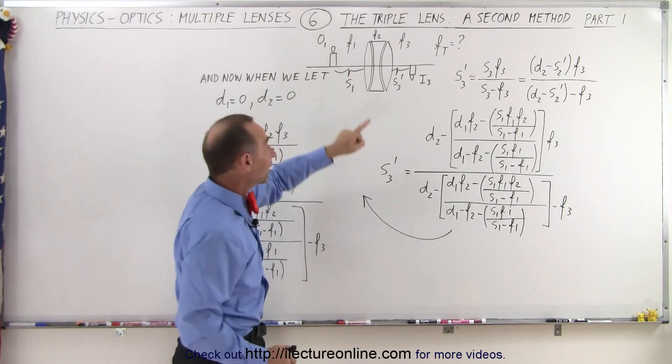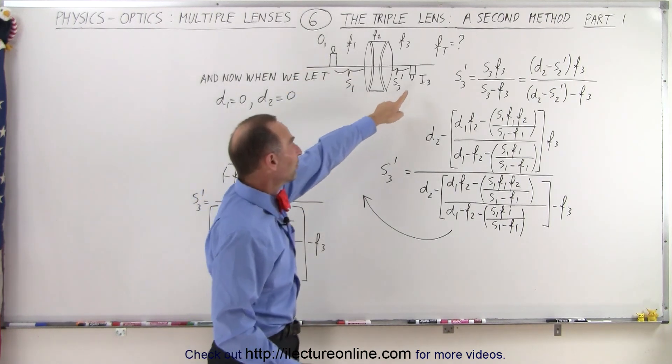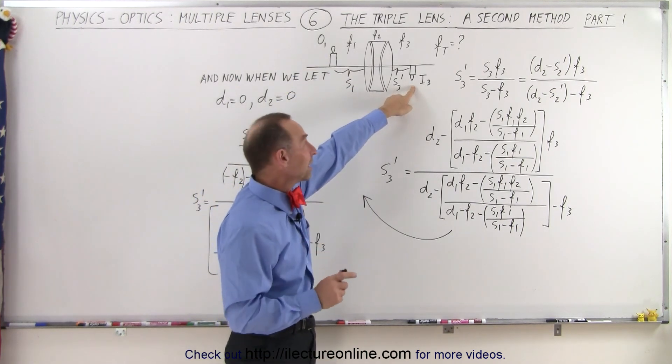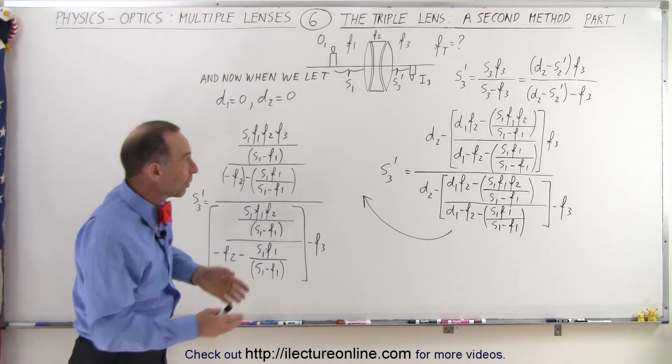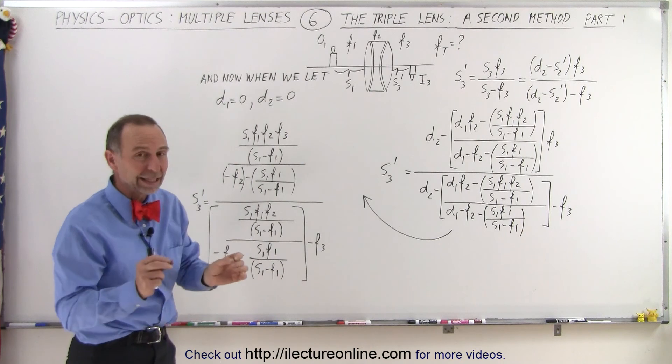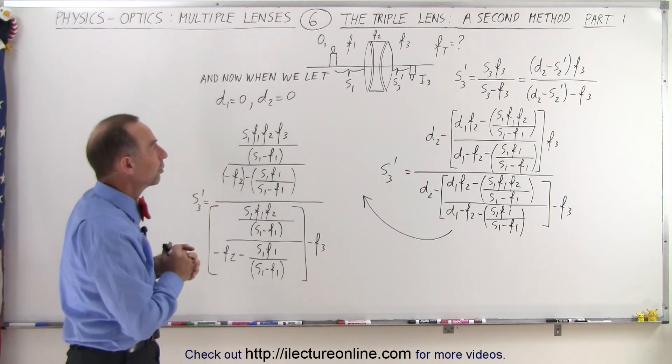We start with the original object in front of the first lens and we end up with a final image, image three, behind the third lens. Now of course it doesn't have to be behind, but we're just going to place it there to make things a little bit easier. This is just a general approach.